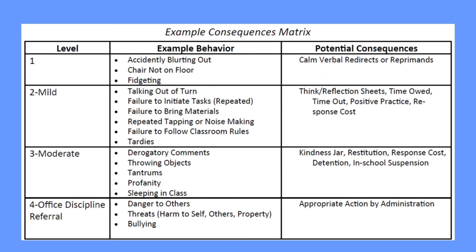Moderate level behavioral problems include making derogatory remarks or comments to peers, throwing objects, showing tantrums, use of profanity, or sleeping in class. For moderate-level problems, consequences include kindness jar, restitution, response cost, detention, school suspension, and other measures you can adopt.